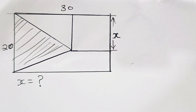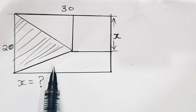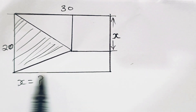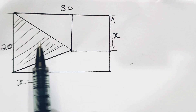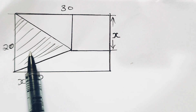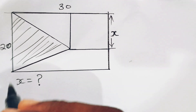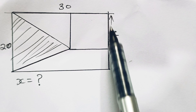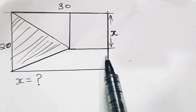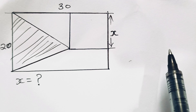Hi friends, welcome back to my channel. Please note this is not drawn to scale. In this particular question, we have a rectangle and a square, and we are told that the area of the triangle and the area of the square are equal. The question says we should find the side of the square.